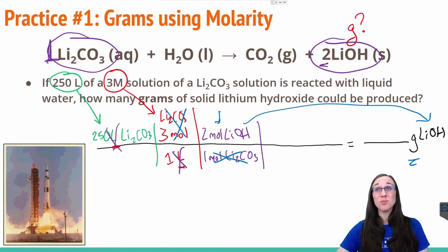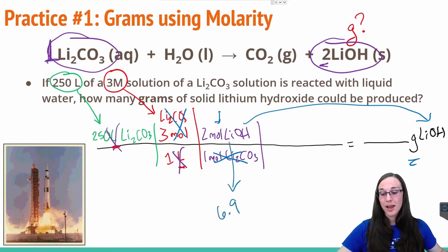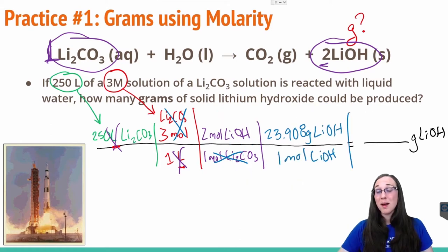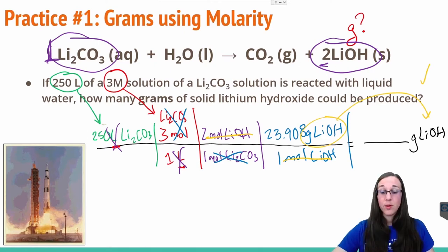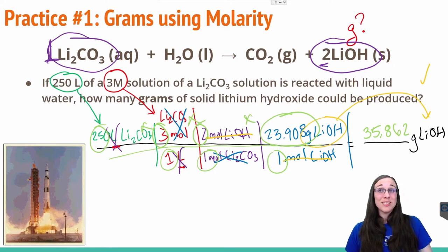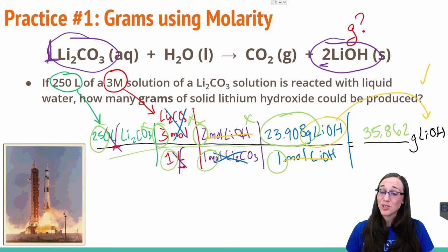In order to get from moles to grams, we have to use molar mass — molar mass of lithium hydroxide, of course. Looking to our periodic table, every lithium atom weighs 6.9 grams, each oxygen weighs 16, and each hydrogen weighs 1.008. So we have a molar mass of 23.908 grams of LiOH for every one mole of LiOH. My moles of lithium hydroxide cancel, and I'm finally left with my goal units. We have 250 × 3 × 2 × 23.908, all divided by 1, for a grand total of 35,862 grams of lithium hydroxide.